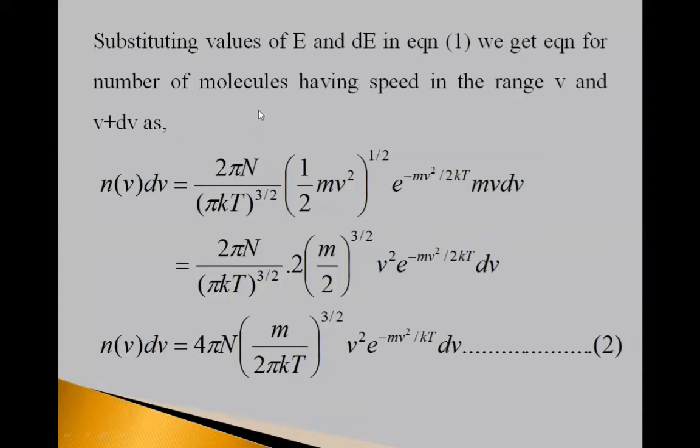We get equation for molecules having speed in the range v and v plus dv as N(v)dv. These are number of molecules is equal to 2πN upon (πkT) raised to 3/2 into 1/2 mv square raised to 1/2, e raised to minus mv square upon 2kT, mvdv.